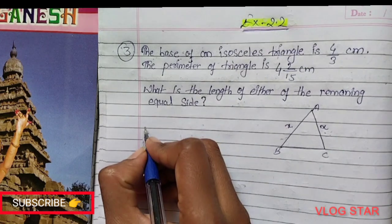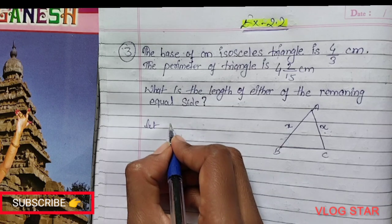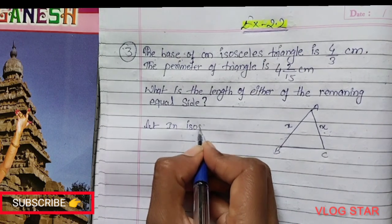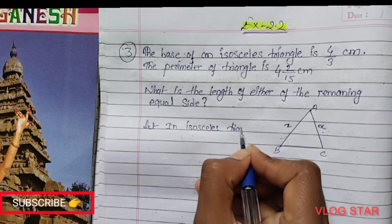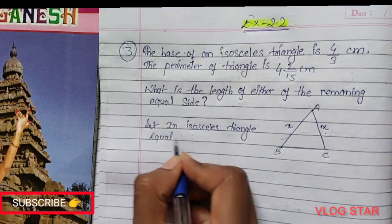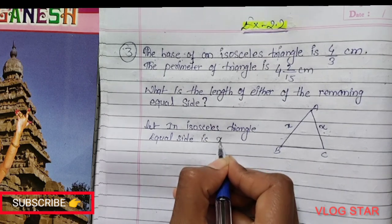Let the equal side be X. So in an isosceles triangle, the equal side is X.